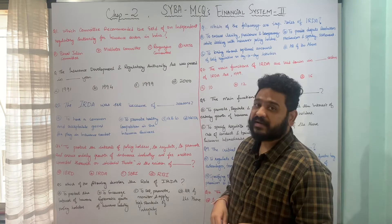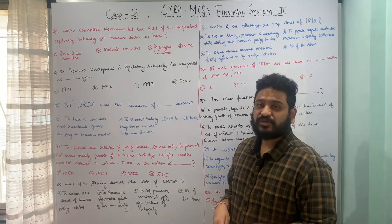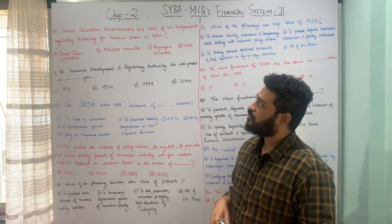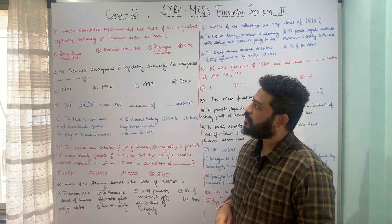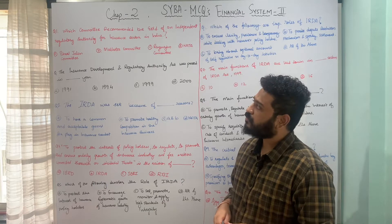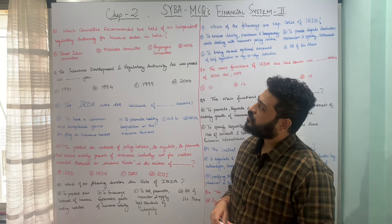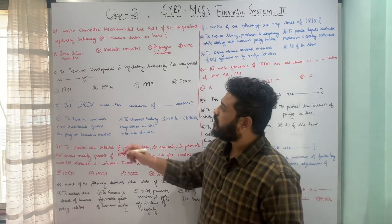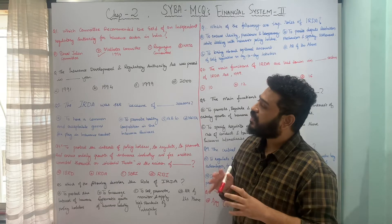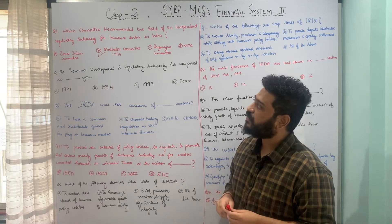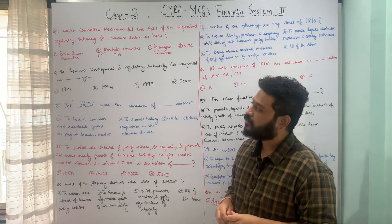The first question is: which committee recommended the establishment of an independent regulatory authority for the insurance sector in India? The options are A - Maljalan Committee, B - Malhotra Committee, C - Rangarajan Committee, or D - None of the above. The correct answer is Option B. The Malhotra Committee in 1994 recommended the establishment of an independent regulatory authority for the insurance sector in India.